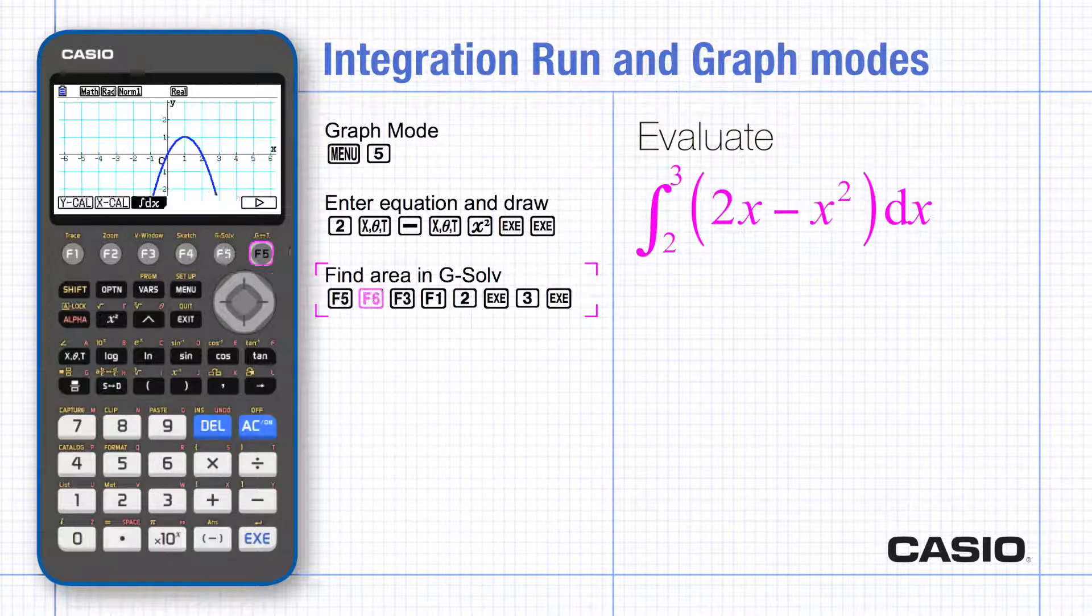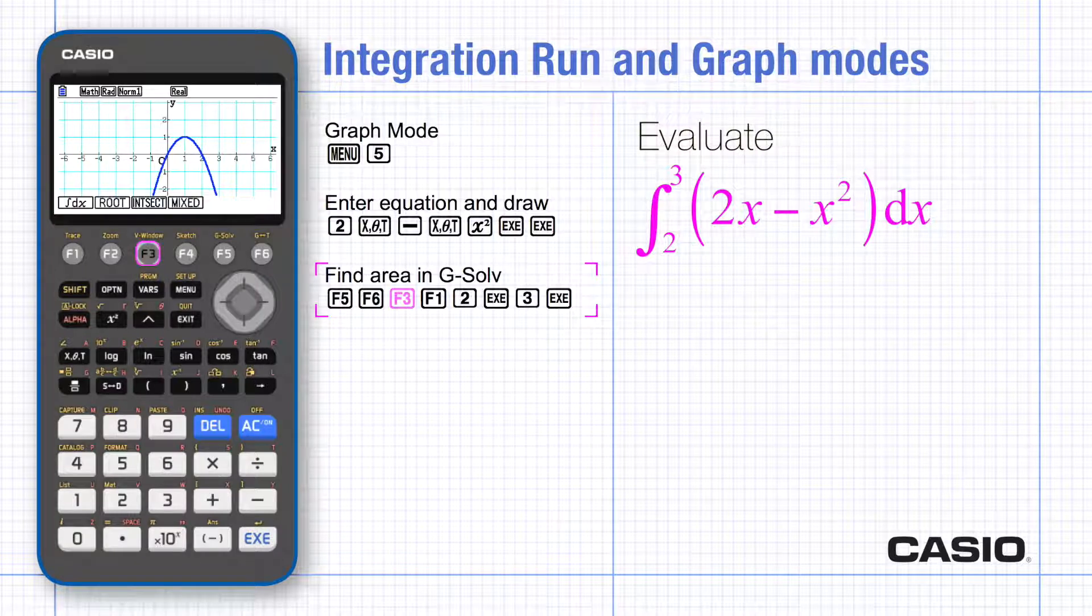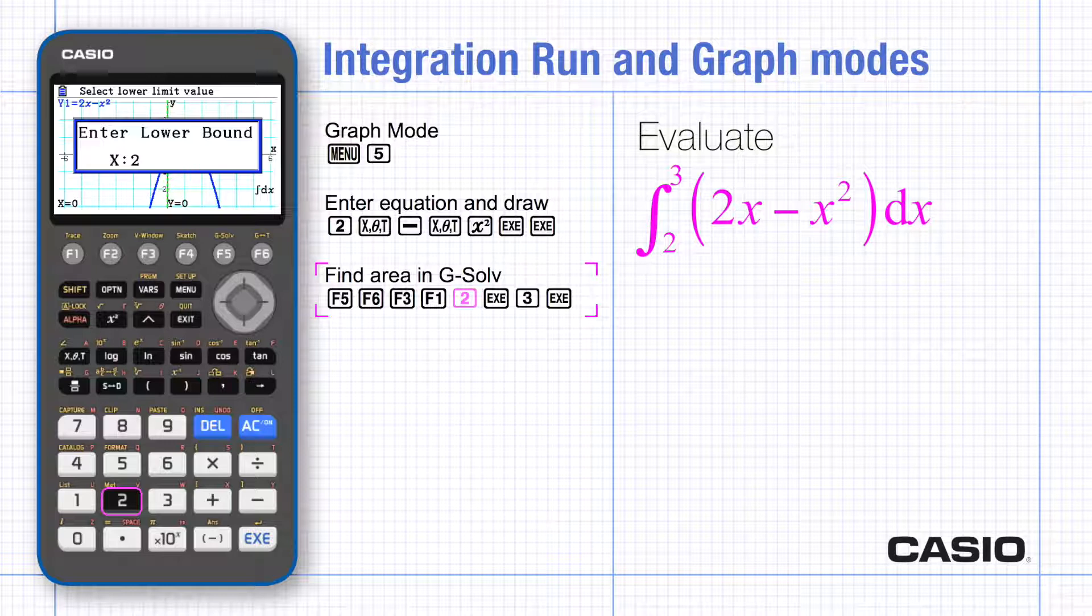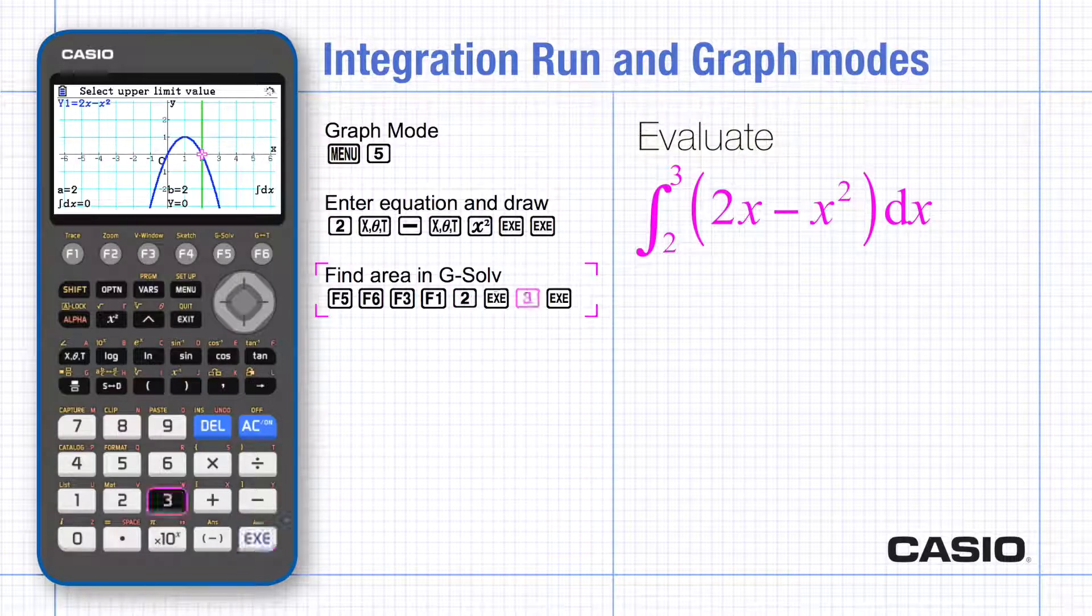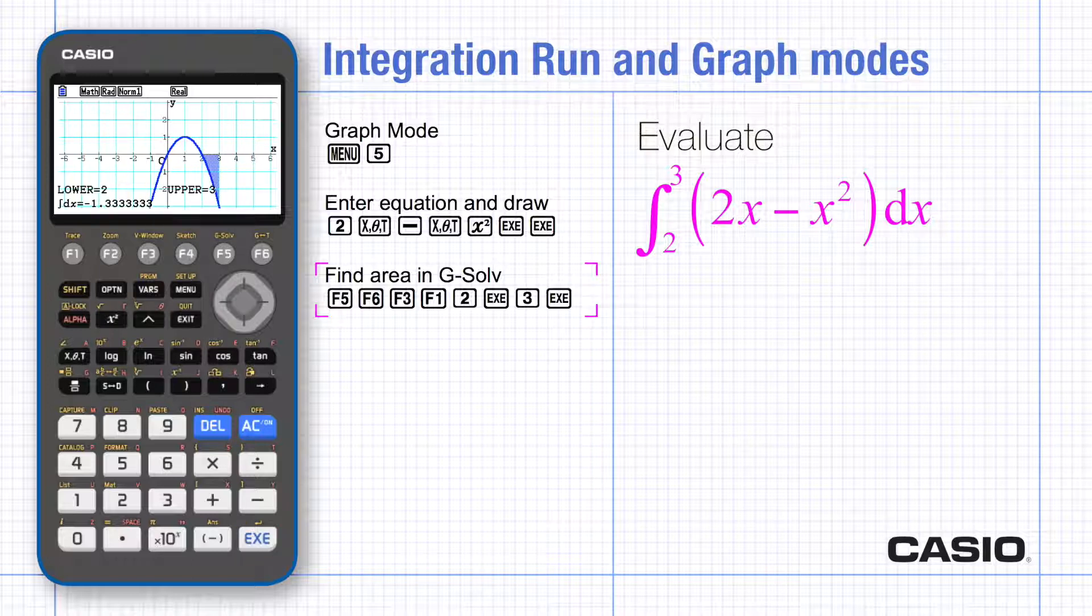Choose g solve and then the arrow for the second page of tools. Choose the first option for integral. Type the lower and the upper limits. Notice the decimal value of the integral is given. It's negative and the region that corresponds to it is shaded on the graph.